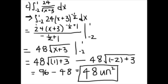Then you take the antiderivative, which is 24 times x plus 3 to the negative 1 half plus 1 over negative 1 half plus 1, boundaries negative 2 to 1. This equals 48 times the square root of x plus 3 with boundaries from negative 2 to 1.